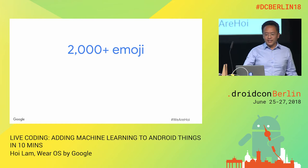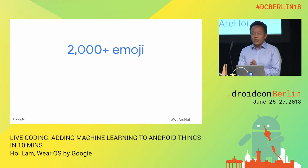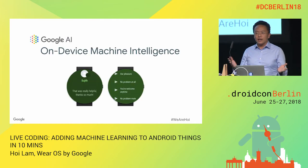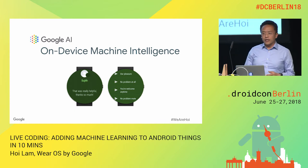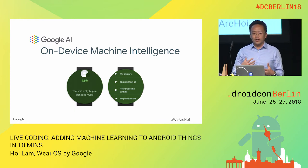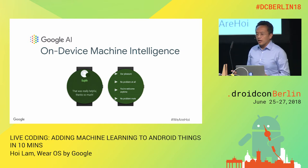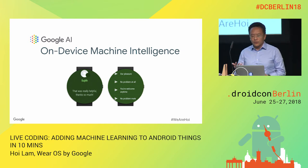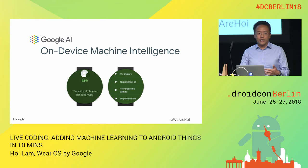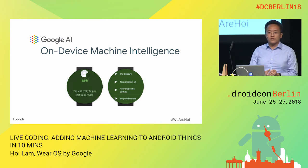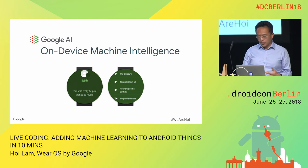The next thing we did was implementing smart replies in any notification that comes to the watch. We partnered with Google Research, now known as Google AI, on the first on-device machine learning model, and basically helped to build the first TensorFlow Lite model and deploy it to real users.